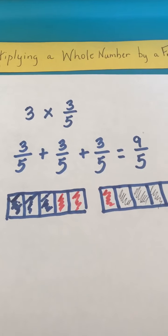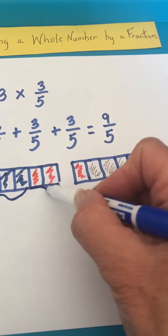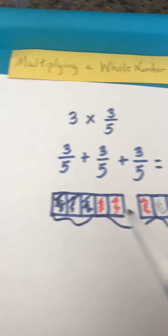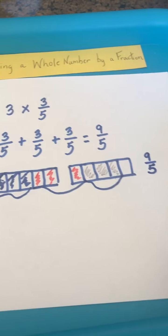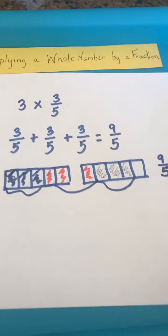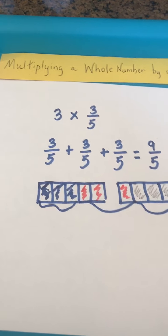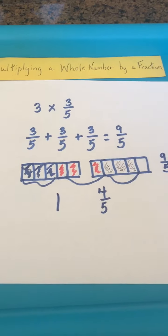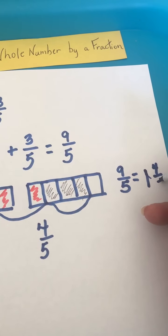Now we can count and see that we have the first group of three-fifths, another group of three-fifths, and the last group of three-fifths. Looking at all of those fifths, we have shaded in nine-fifths. And you can probably see more easily that this improper fraction is a mixed number. If we simplify, we have one whole and four-fifths. So nine-fifths is equal to one and four-fifths.